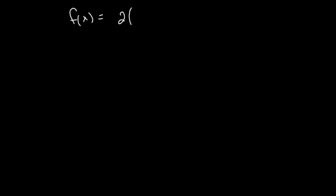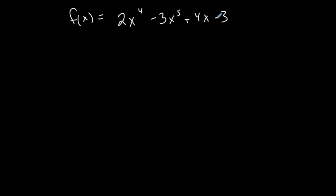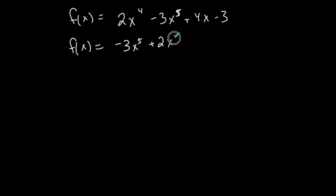Let's start with an easy example: 2x to the fourth minus 3x to the fifth plus 4x minus 3. This is a polynomial function — the coefficients are 2, negative 3, 4, and negative 3. It's not in standard form, so rewrite it as negative 3x to the fifth plus 2x to the fourth plus 4x minus 3, going from highest exponent to lowest.